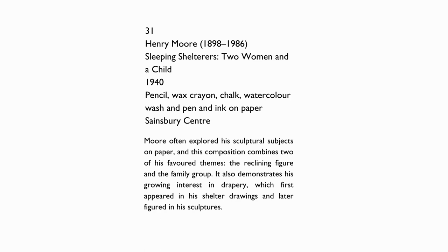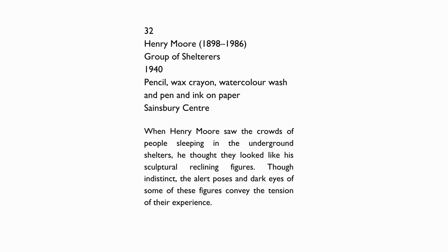Moore often explored his sculptural subjects on paper, and this composition combines two of his favourite themes: the reclining figure and the family group. It also demonstrates his growing interest in drapery, which first appeared in his shelter drawings and later figured in his sculptures. When Henry Moore saw the crowds of people sleeping in the underground shelters, he thought they looked like his sculptural reclining figures. Though indistinct, the alert poses and dark eyes of some of these figures convey the tension of their experience.